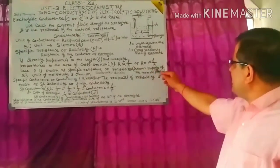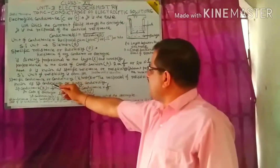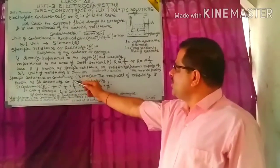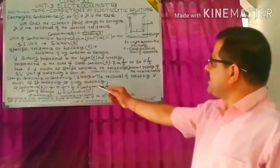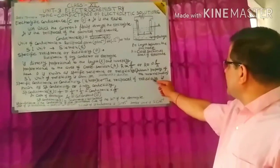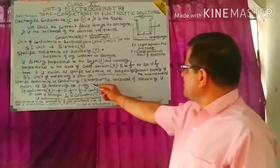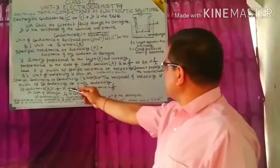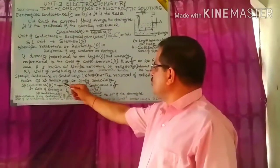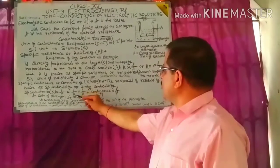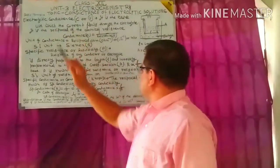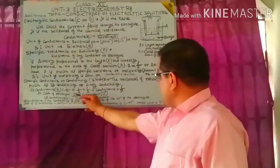Resistivity is the inherent property of the material or medium. Specific conductance or conductivity — IUPAC recommends the term conductivity over specific conductance. Conductivity is represented by kappa (κ). It is the reciprocal of resistivity: κ = 1/ρ = (1/R) × (L/A). Here, 1/R is called conductance, so conductivity equals conductance multiplied by L/A.